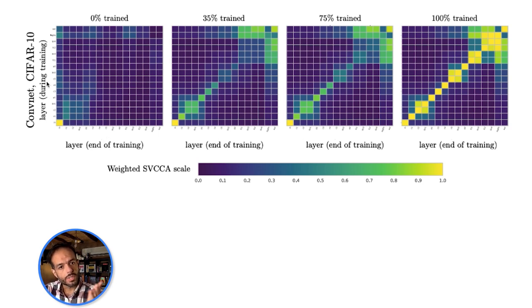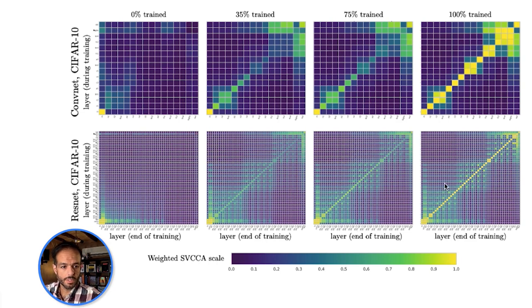What this tells us is that the earlier layers really converge or are trained earlier on in the training process. So while this model was 35% trained, these first eight layers got to maybe 0.7 or 0.8 similarity score with the representation that they will have at the end of training. This gives you the indication that these models rely on training the earlier layers first and then using those outputs to train the later layers.